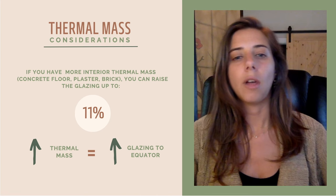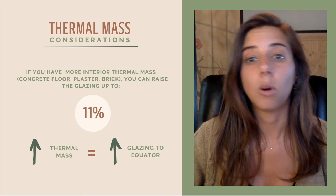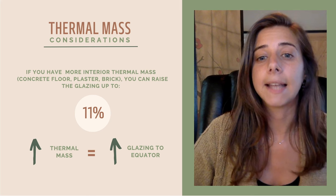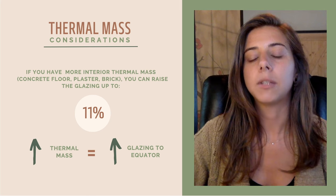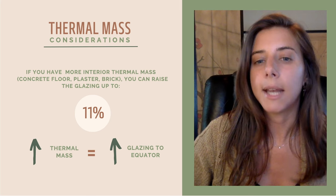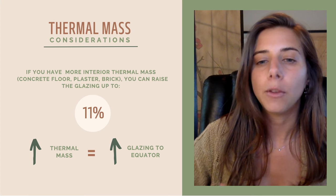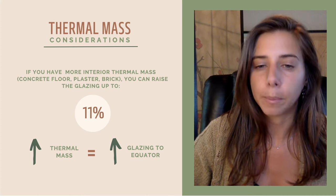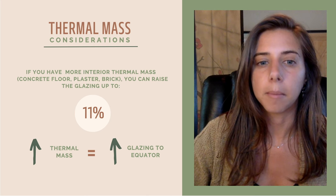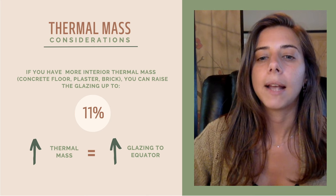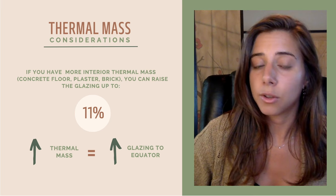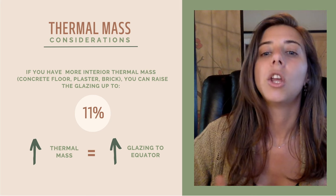If you look at earthships, for example, you notice they have a whole greenhouse on the south side. The only way they're able to get away with that without overheating is they have a whole earth berm behind the house, which is accounting for thermal mass. The more thermal mass you have, the more glazing you can have. The rule of thumb is no more than 11% — otherwise you have to make sure you have adequate cooling systems in place. If you increase your thermal mass, you can calculate that you can increase your glazing.